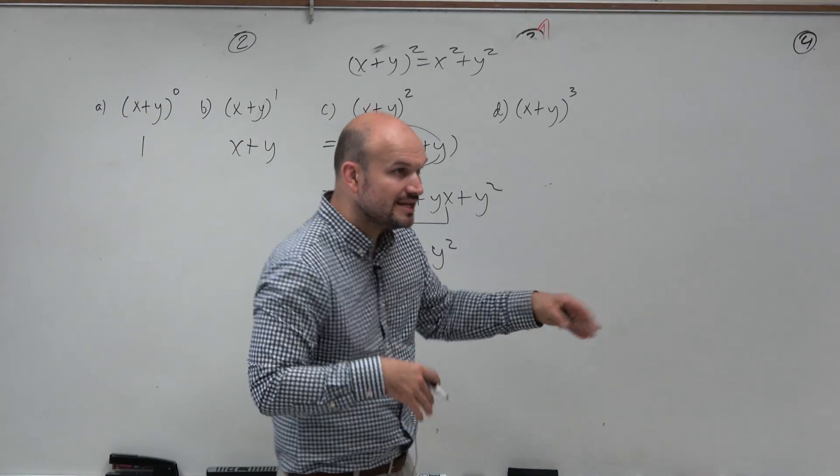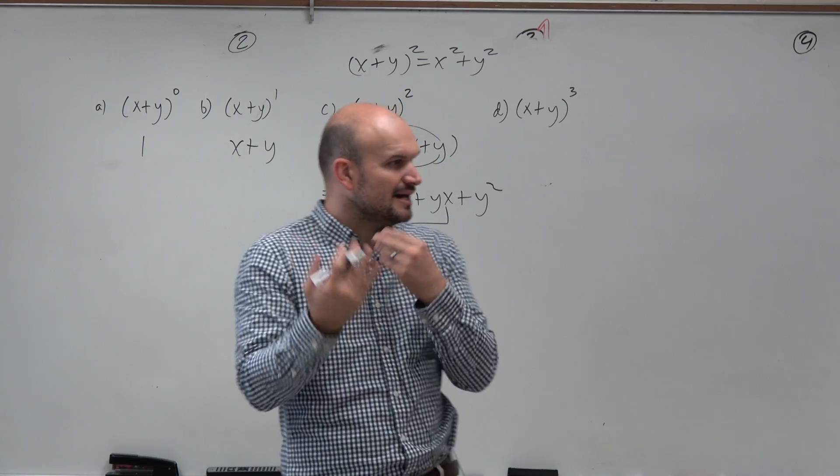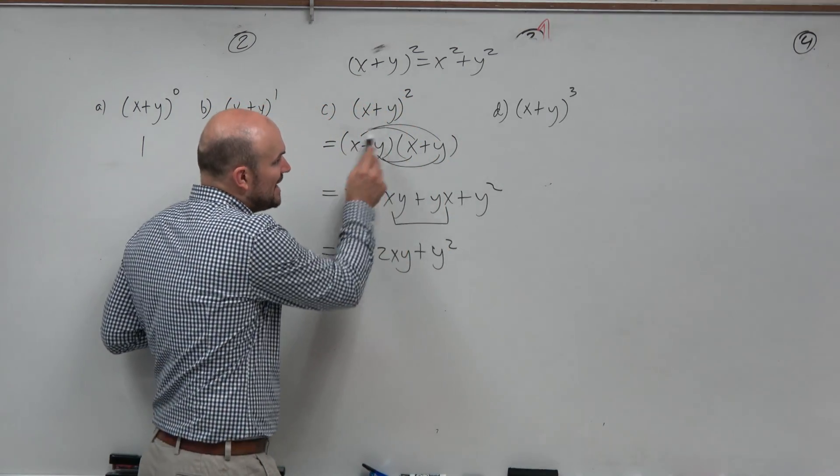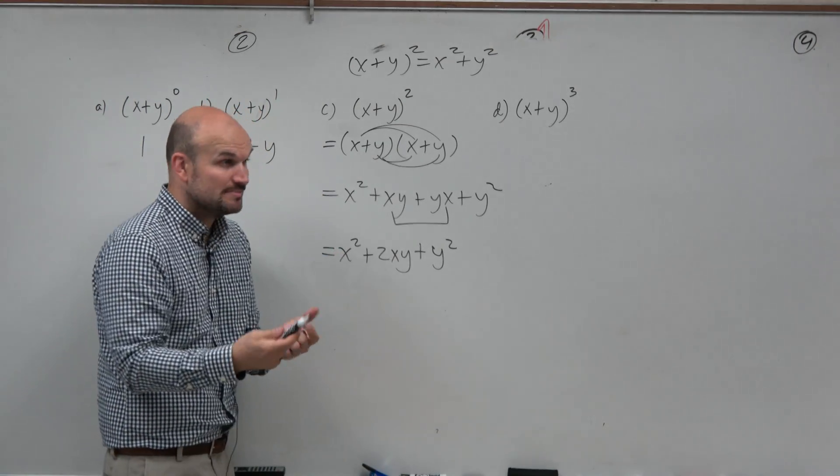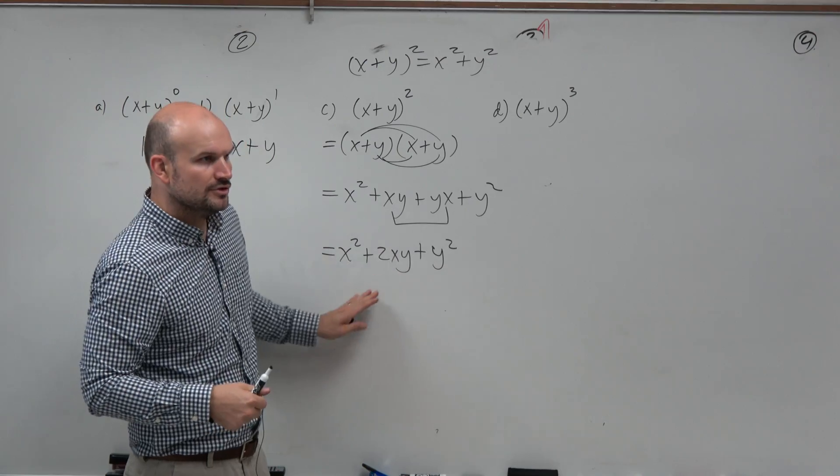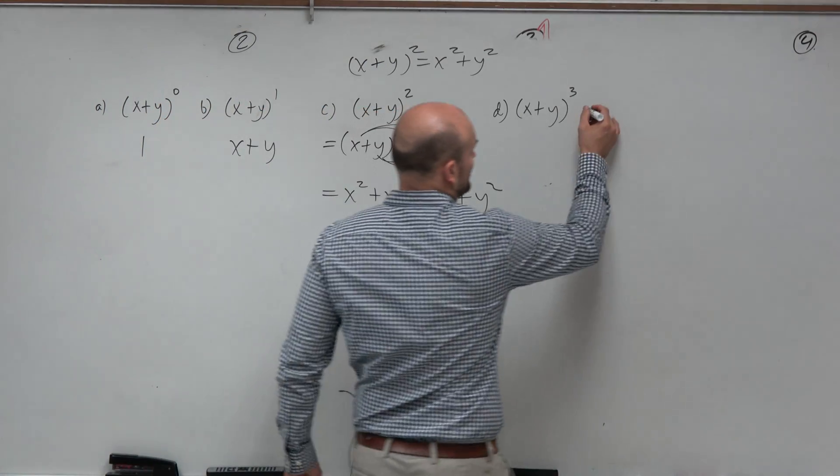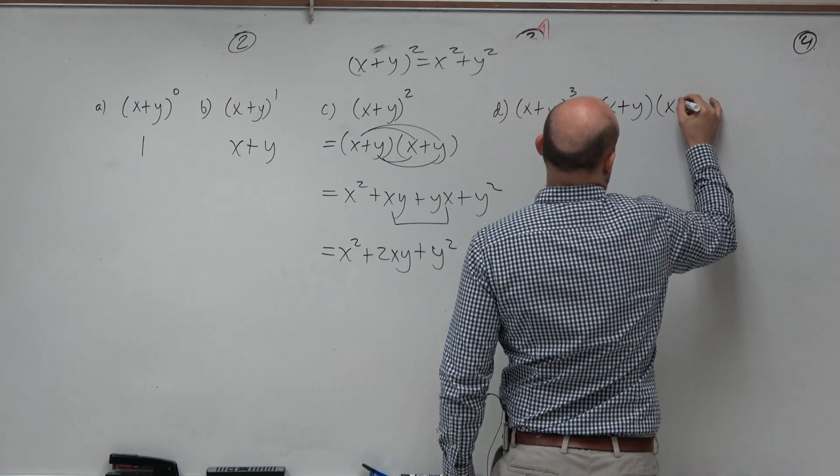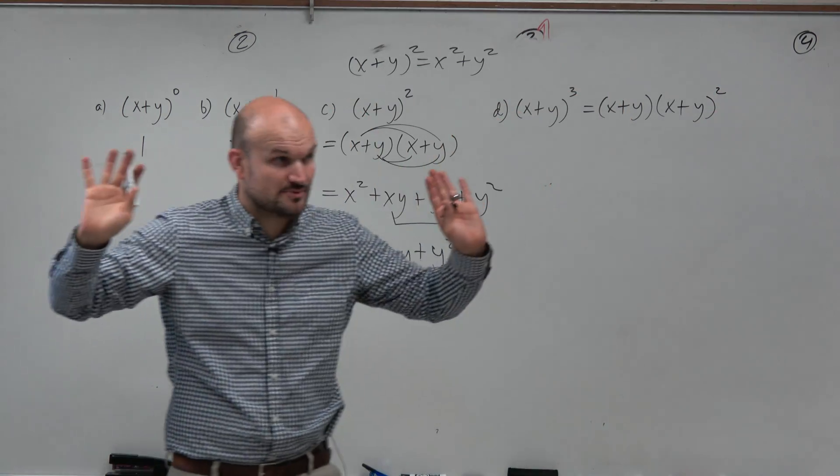OK. Now, x plus y cubed is x plus y times x plus y times x plus y, right? But I'm going to make this a little bit easier. I already know this result. And usually, guys, a binomial squared, if you did your polynomials, you've practiced some of that, you should hopefully be able to do this relatively easily. So I'm actually going to rewrite this problem as x plus y times x plus y squared. Isn't that the same thing as x plus y cubed?